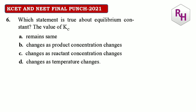Which statement is true about the equilibrium constant value of Kc? It remains the same — check options. Changes as product concentration changes — not correct. Changes as reactant concentration changes — not correct, because Kc does not depend on concentration. Changes as temperature changes — this is the correct one. So the answer is D.